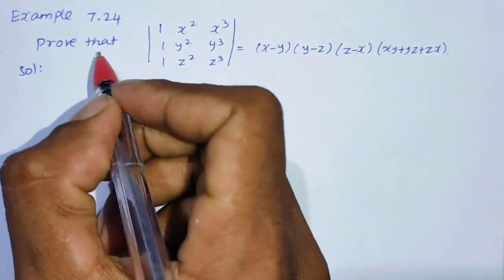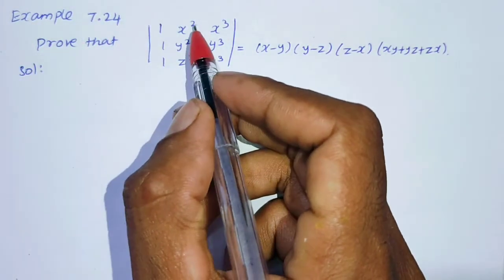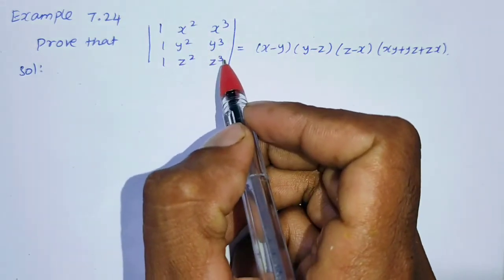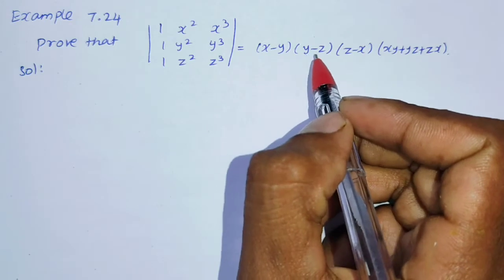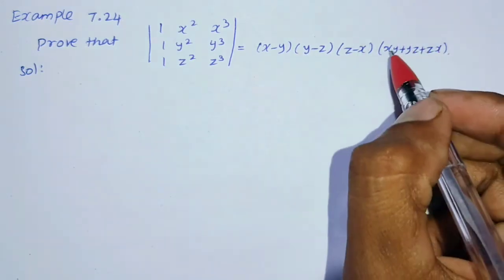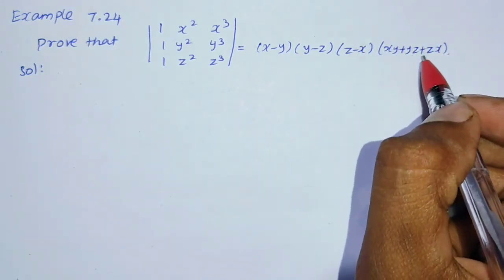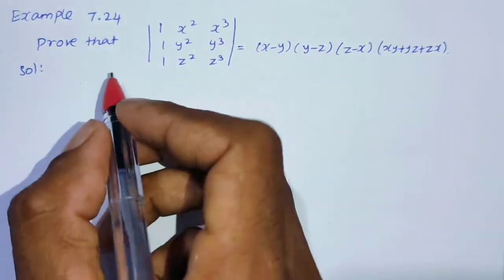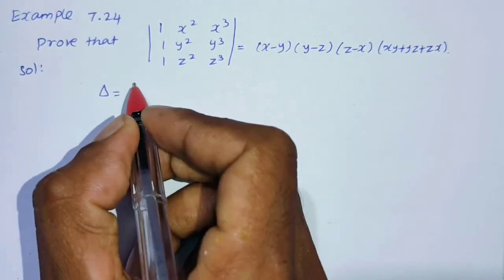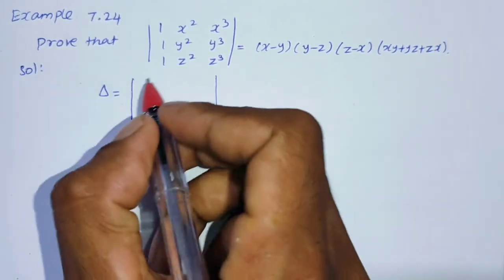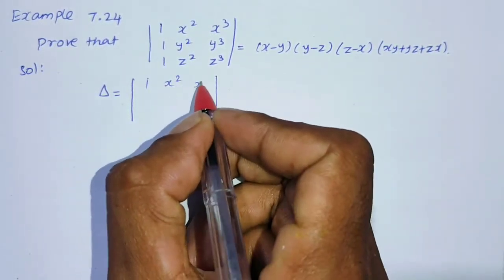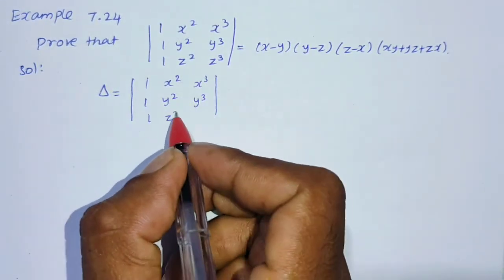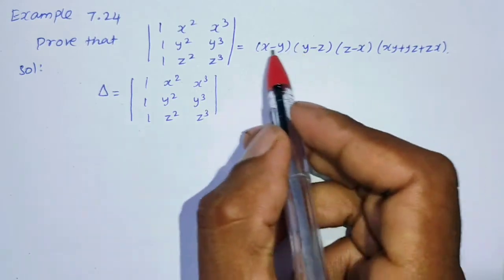Example 7.24: Prove that the determinant of the matrix with rows (1, x², x³), (1, y², y³), (1, z², z³) equals (x−y)(y−z)(z−x)(xy+yz+zx). We can prove it. So in the solution, we set up the determinant matrix delta with values 1, x², x³ / 1, y², y³ / 1, z², z³.